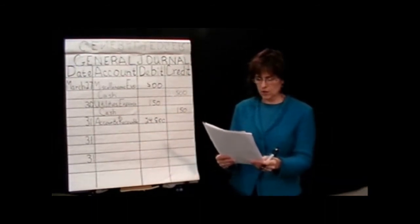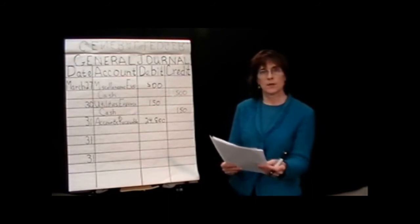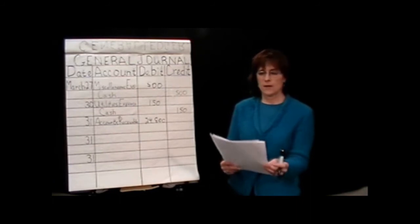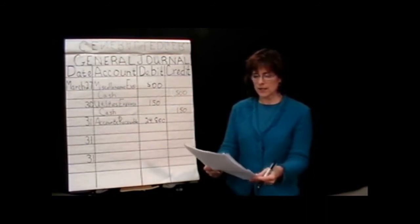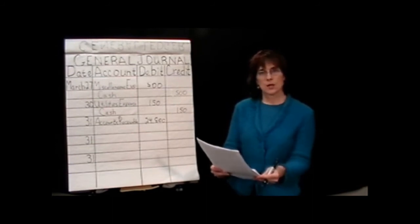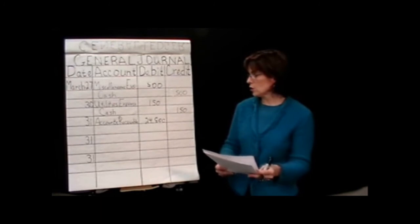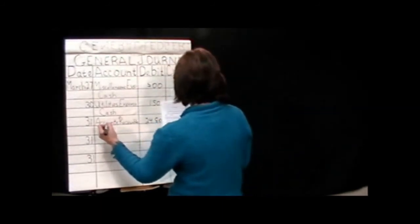All right. Fees earned. We talked about that was a revenue account. And I see when we look at our chart of accounts that, yes, we do have that listed. And if we go back to the rules of debits and credits, when we're increasing revenue accounts, because we earned some revenue accounts, it's a credit. So we're going to credit fees earned for $24,800.